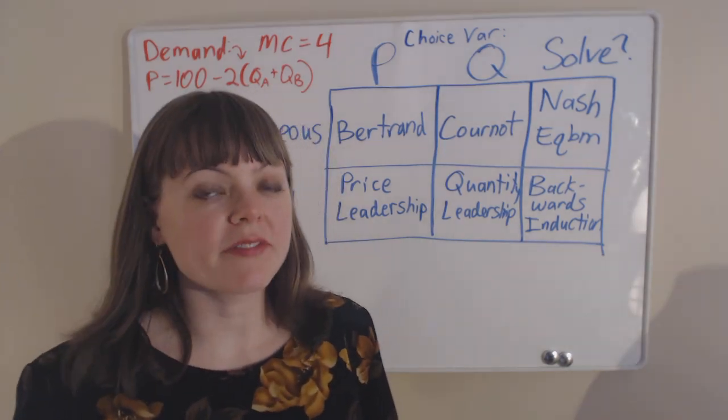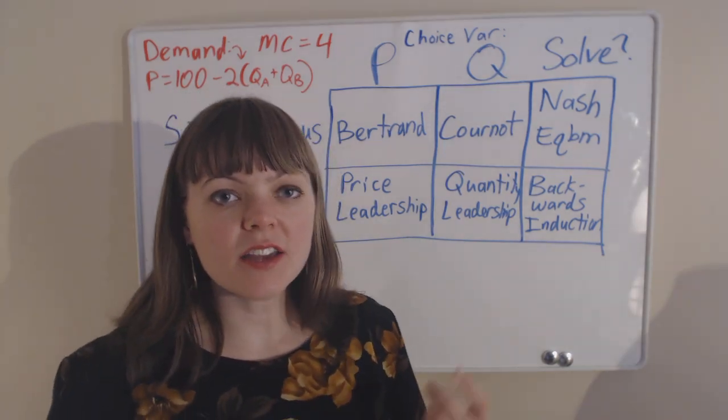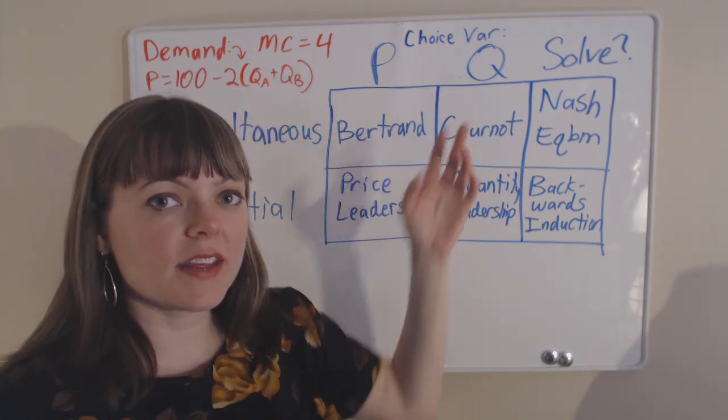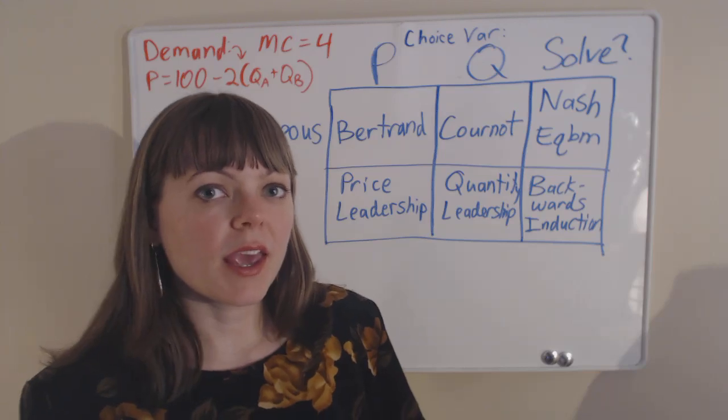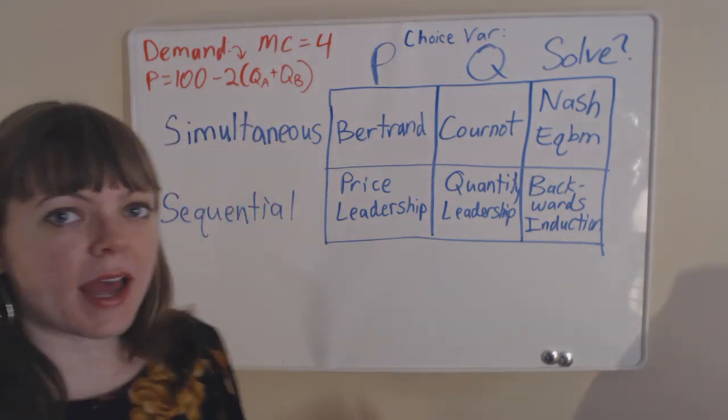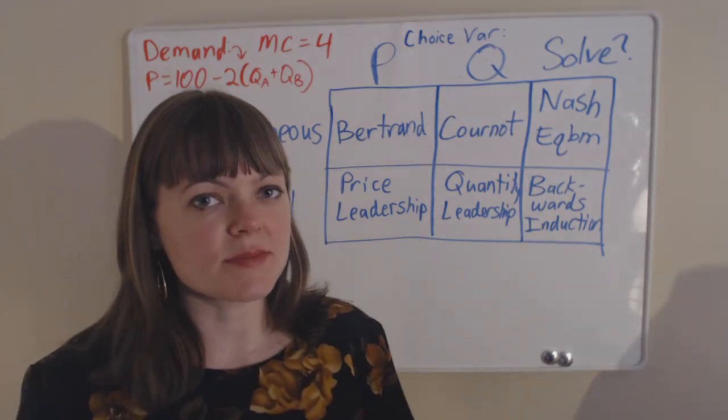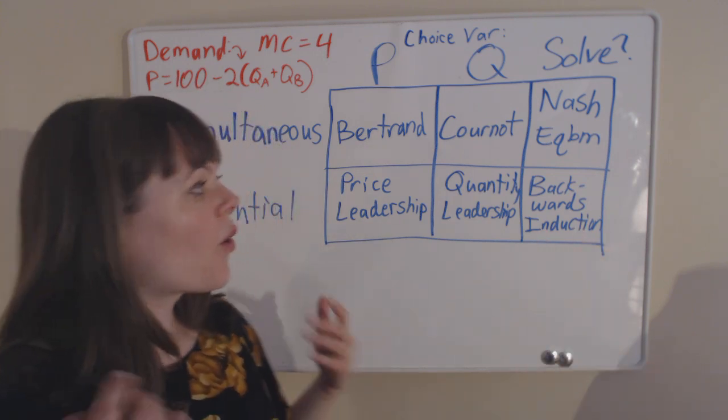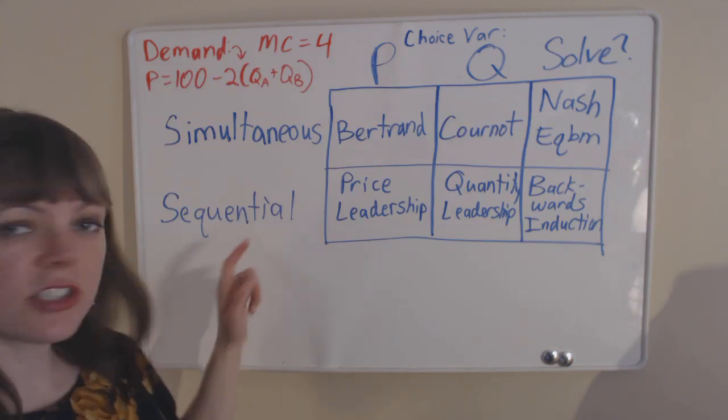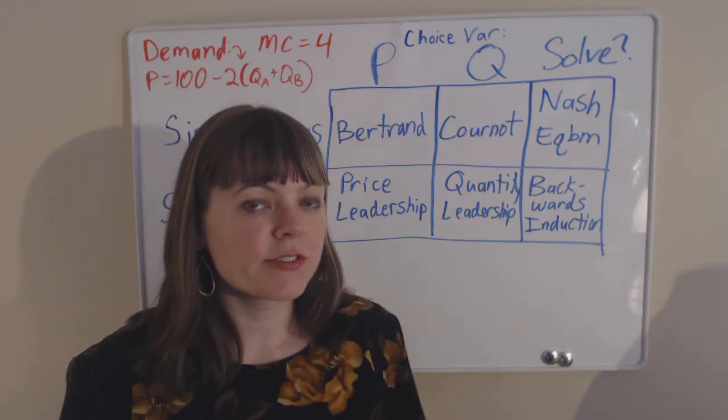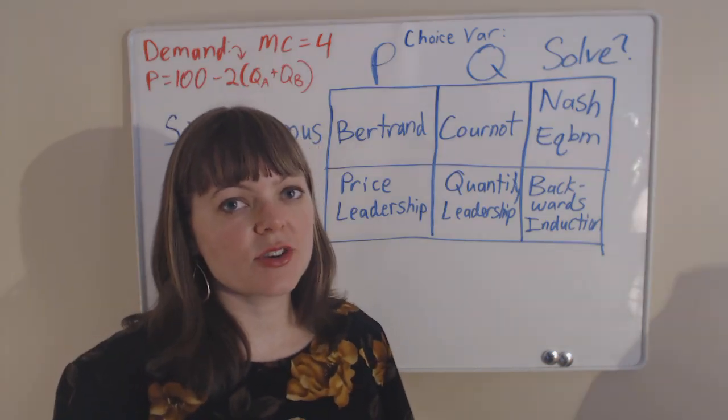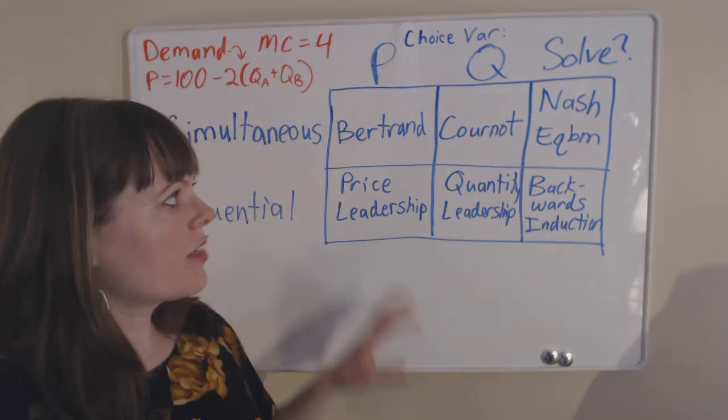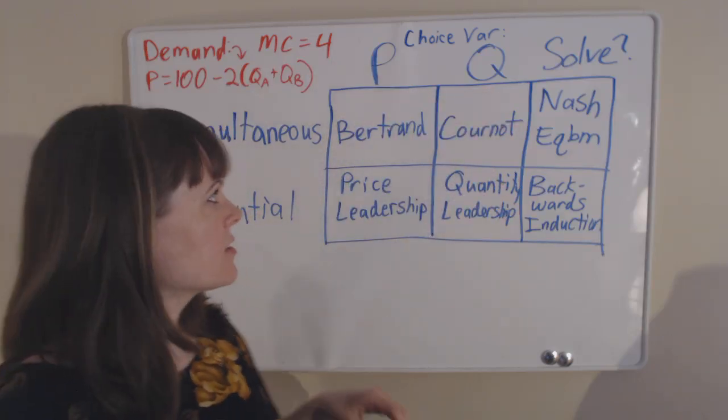I'm explaining the four types of oligopolies. Oligopolies can either choose price or quantity as their choice variable, and they can either move at the same time, where they're both setting the price at the same time and then find out together what the other one chose, or else they have a sequential moves game where one player moves first as the leader and another player moves second as the follower.